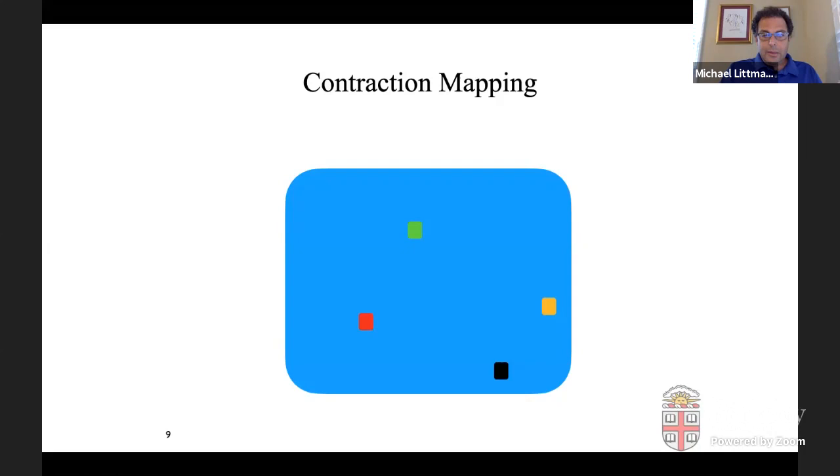So this contraction, it has ultimately the operator, the Bellman operator with respect to this way of summarizing values has the contraction property, which means as we apply that operator to values, to vectors of values, the summaries are getting closer and closer to each other. And that means that there is some value in the space, which in this case is marked by the red rectangle that everybody is going to go to any value vector that we start with. If we keep applying this operation, it's going to get closer and closer and closer. It's going to converge to that fixed point.